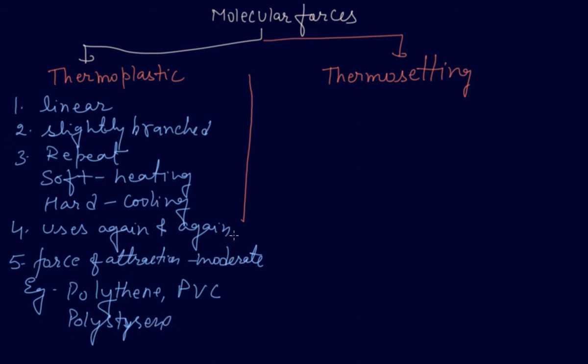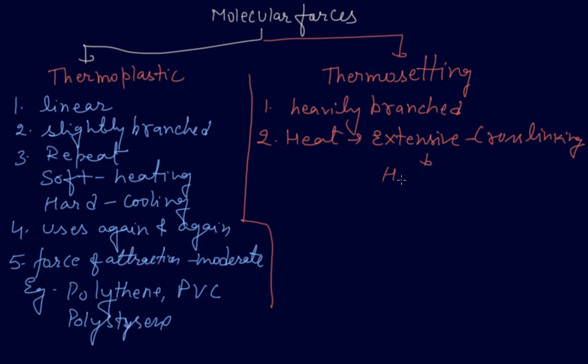Whereas in thermosetting polymers, they are heavily branched, which on heating undergo extensive cross-linking. The extensive cross-linking forms them hard, insoluble, and infusible.